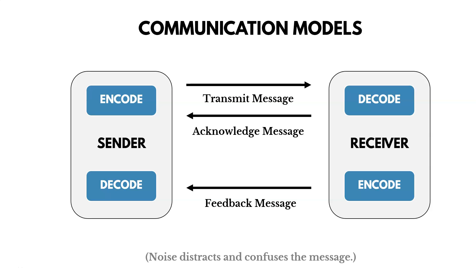Communication models help us understand how people communicate, which can inform how we work and speak with our stakeholders. In the communication model, there's a sender and a receiver. The sender encodes a message and transmits it. The receiver decodes that message — and oftentimes there is noise in that message. Hopefully the sender is communicating clearly. The receiver decodes it and sends back an acknowledgement message. So if somebody tells you something, you might say 'okay, yes, I understand' — that's an acknowledgement message.